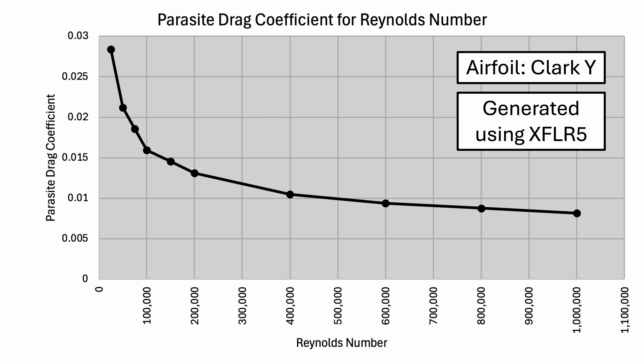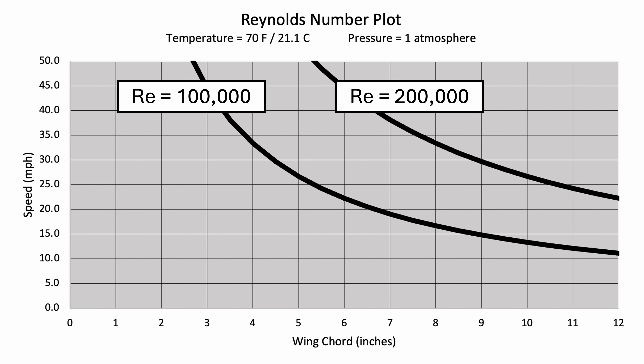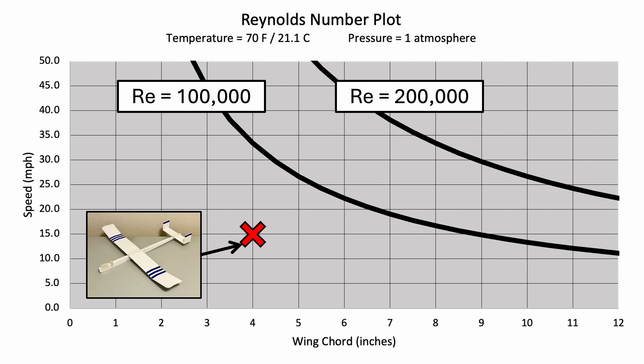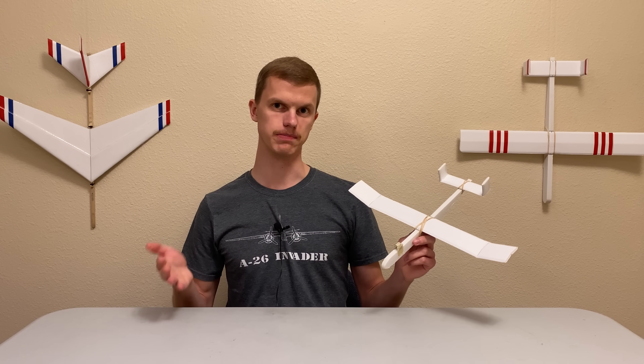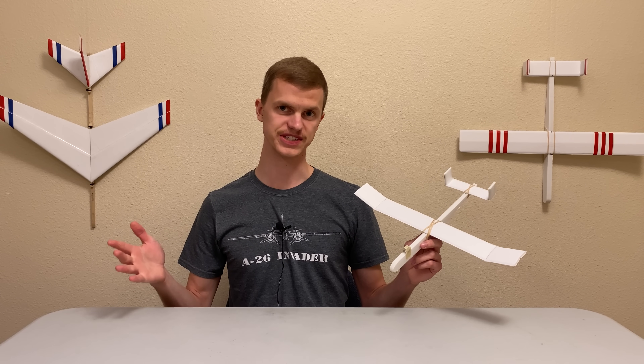It turns out that at low Reynolds numbers, the parasite drag coefficient increases significantly. Using a Clark Y airfoil — a popular choice on model airplanes — we can see that below a Reynolds number of about 100,000, the parasite drag coefficient skyrockets. We can plot the wing chord and speed of our planes and add lines for Reynolds numbers of 100,000 and 200,000. Everything below the 100,000 line is impacted by additional parasite drag, meaning our small, slow-flying planes can't fly as far.